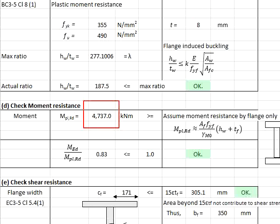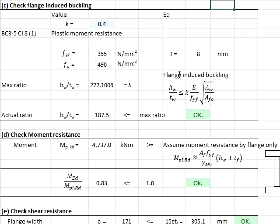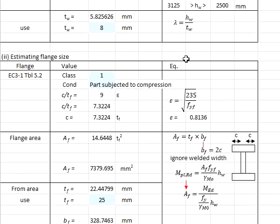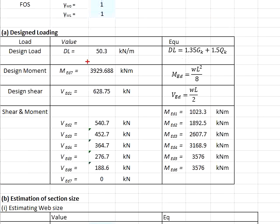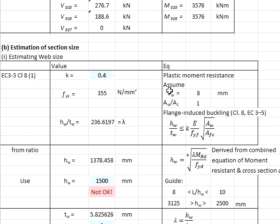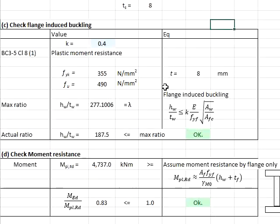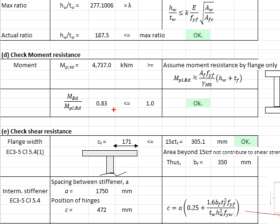The moment resistance is then compared with the moment load as per calculated in the previous steps. And it is found that the moment resistance is actually higher than the load. Therefore, the moment resistance is considered acceptable.